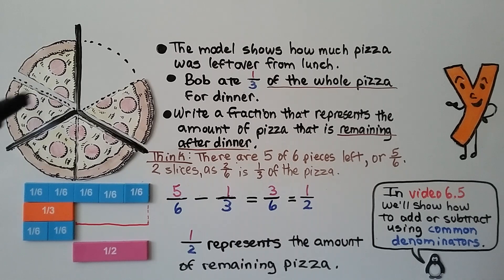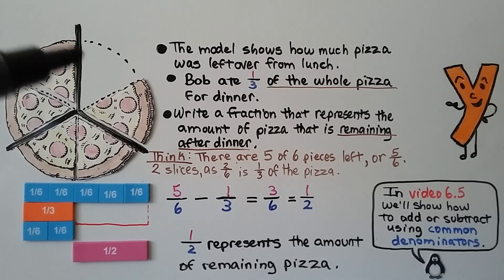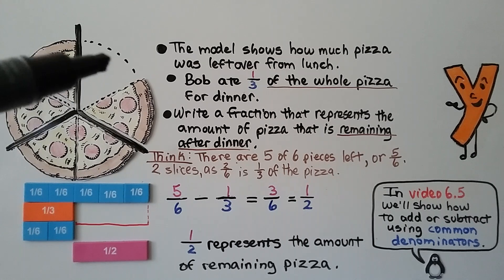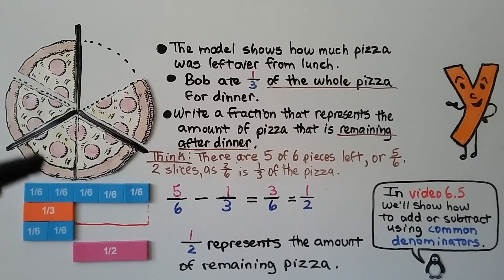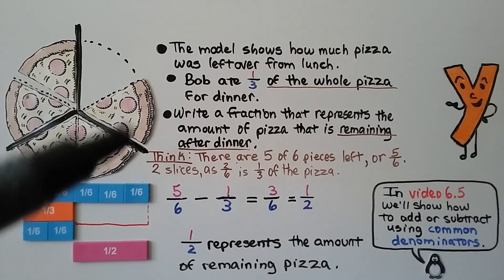The model shows how much pizza was left over from lunch. Bob ate one-third of the whole pizza for dinner. Write a fraction that represents the amount of pizza remaining after dinner. So we think, there's one piece missing. There were one, two, three, four, five, six in all. There's five-sixths left.